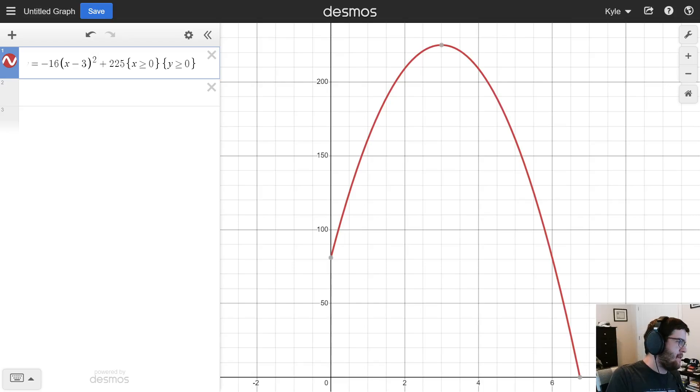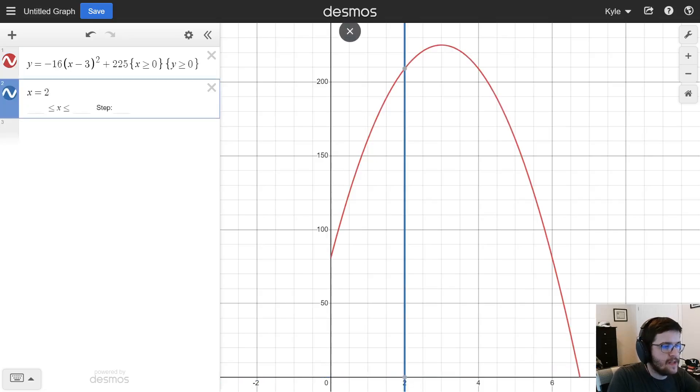So, I believe it asks for the time, it says 2 seconds after. So, that's an x value. So, let's type in x equals 2. And I can just click on it. And we get a height of 209. So, the answer for this one would be 209 feet.